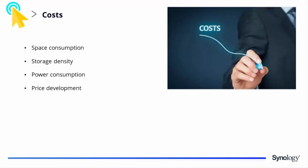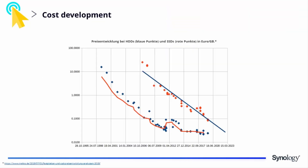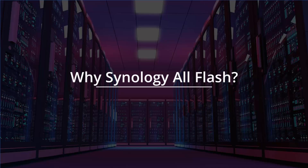Looking at price movements, the drastic drop in SSD prices will continue with no end in sight. Currently the cheapest models are already available at 8 to 9 euro cents per gigabyte. Hard drive prices are still lower but stagnant, at around 2.4 cents per gigabyte. In the second part of today's video we'll take a quick look at the Synology Flash portfolio and all of its solutions.